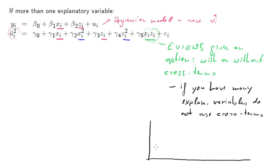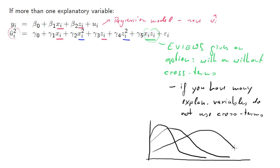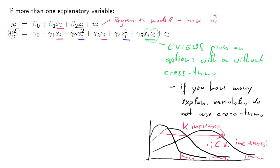If you have more than two variables, you often get a lot of these cross terms, and therefore one rule of thumb is that if you have very many explanatory variables, you do not use the cross terms. Why? If you were to include them, your degrees-of-freedom parameter would mushroom — there would be a lot of degrees of freedom. What happens to the chi-squared distribution if you increase the degrees-of-freedom parameter? It moves to the right, and the critical values would just be increasing as well, making it more difficult to reject the null hypothesis.